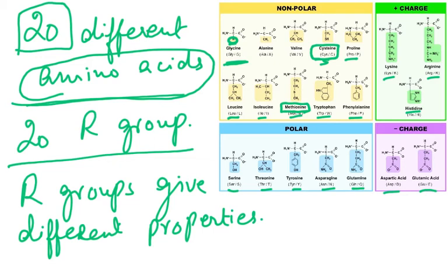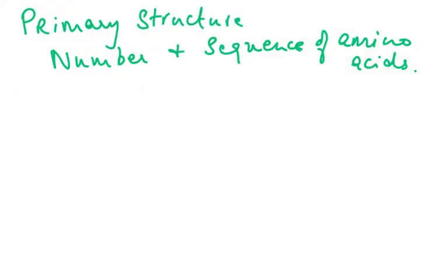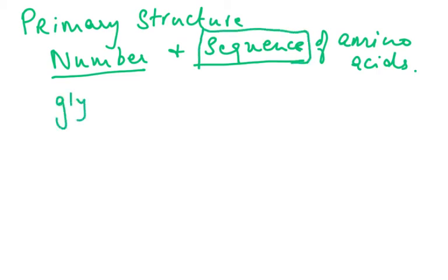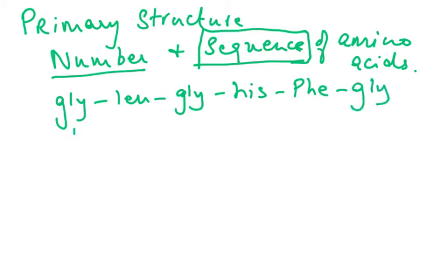The primary structure of any protein is the number and sequence of amino acids — what is the first, second, third amino acid, and so on. For example: GLY, HIS, PHE, GLY — six amino acids in a chain will have five peptide bonds.